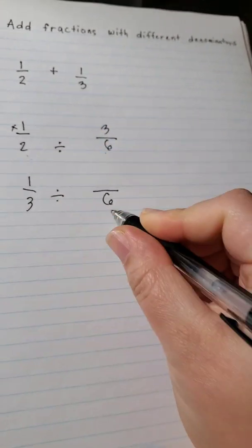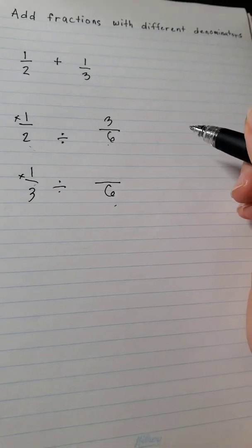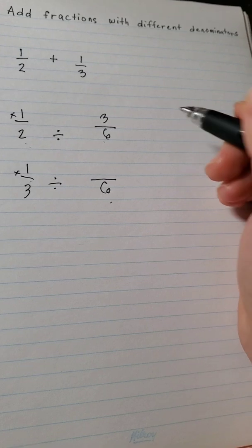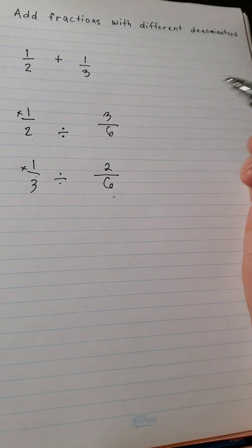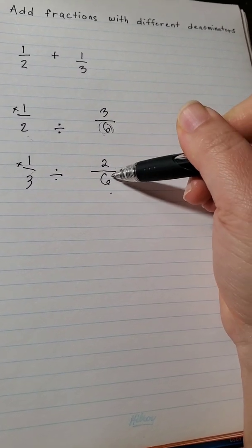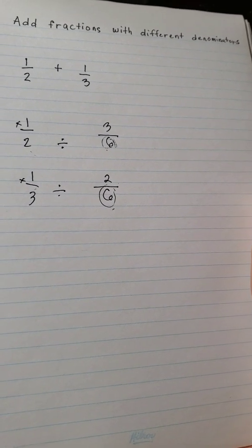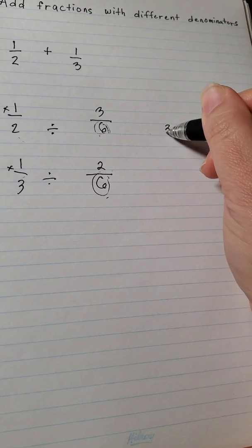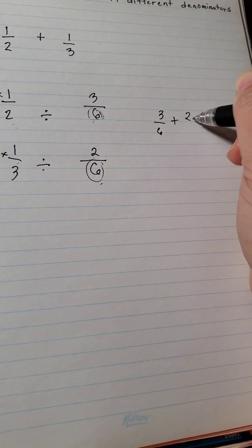6 divided by 3 is 2 times 1, and this is 2. So now you have a common denominator for both fractions and now you can add it. 3 over 6 plus 2 over 6 equals 5 over 6. This is your answer.